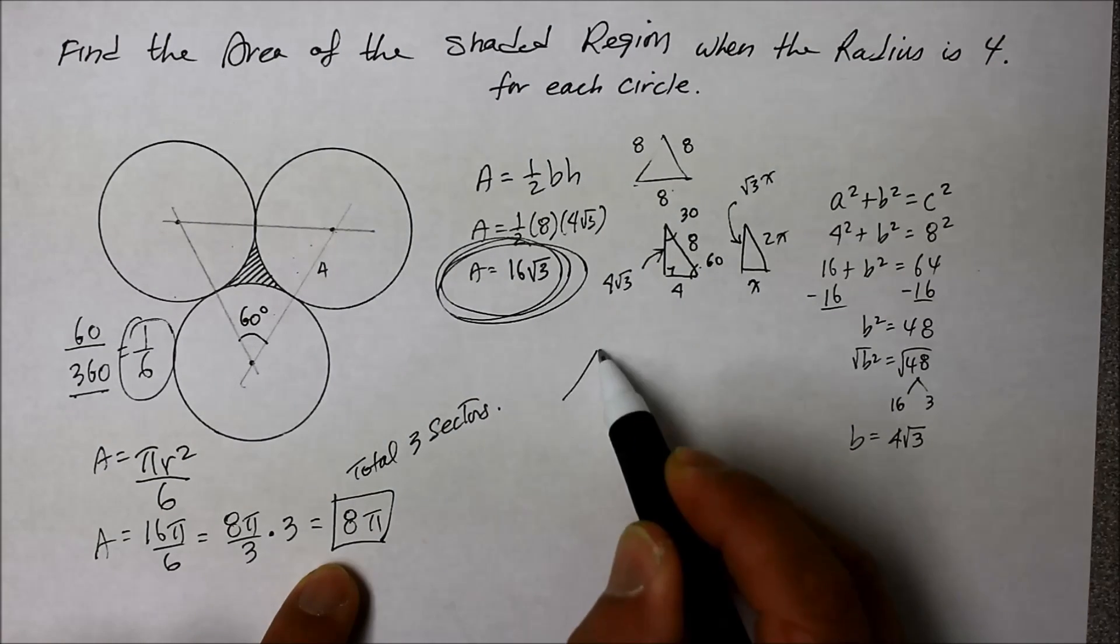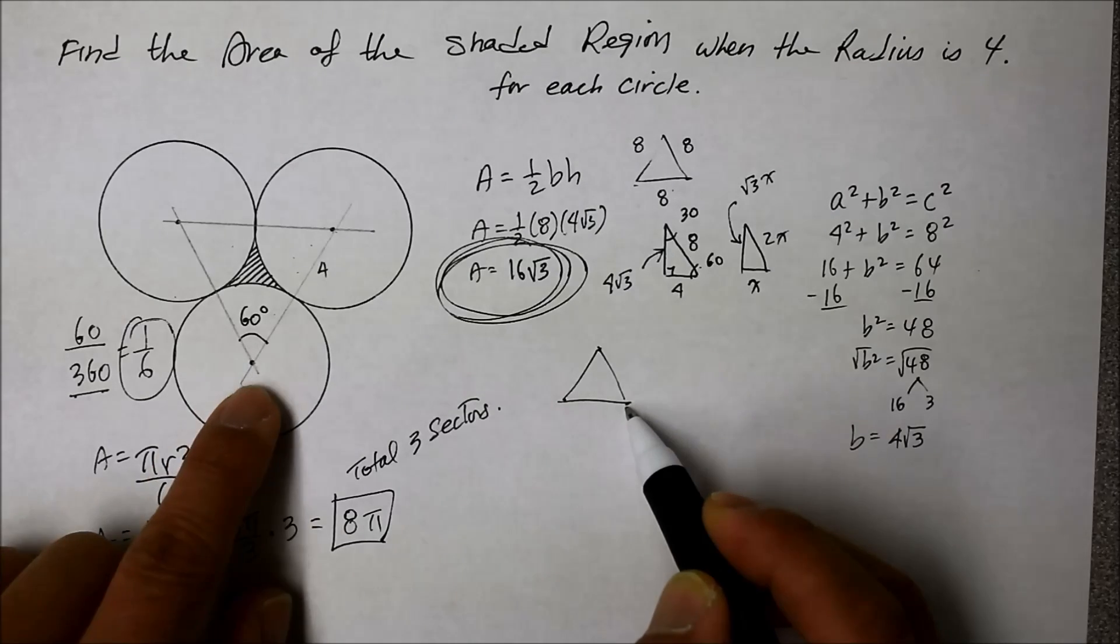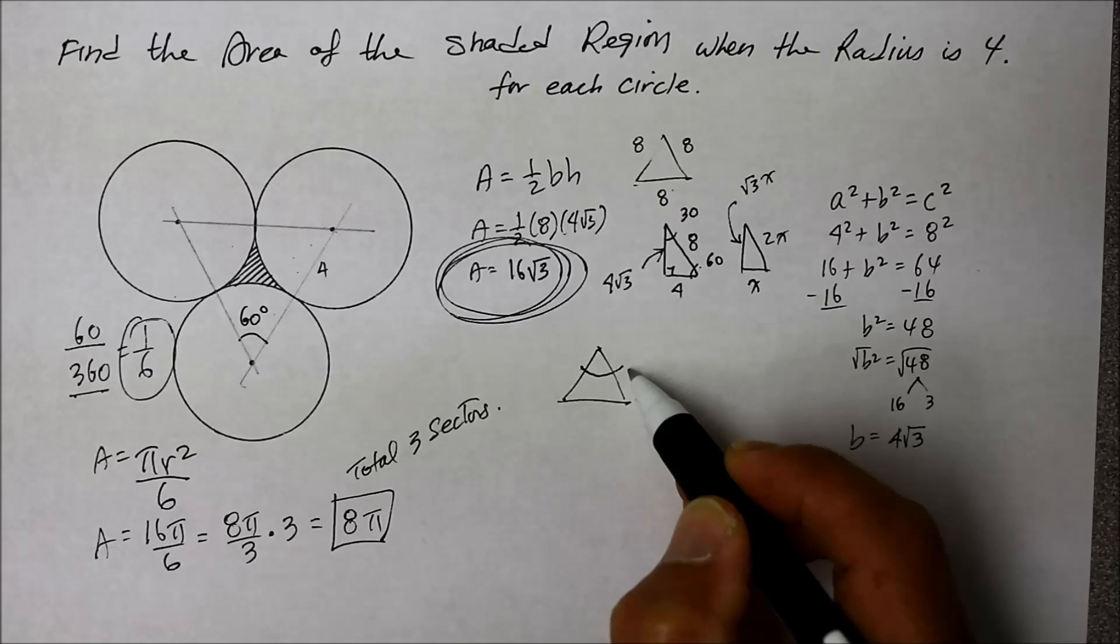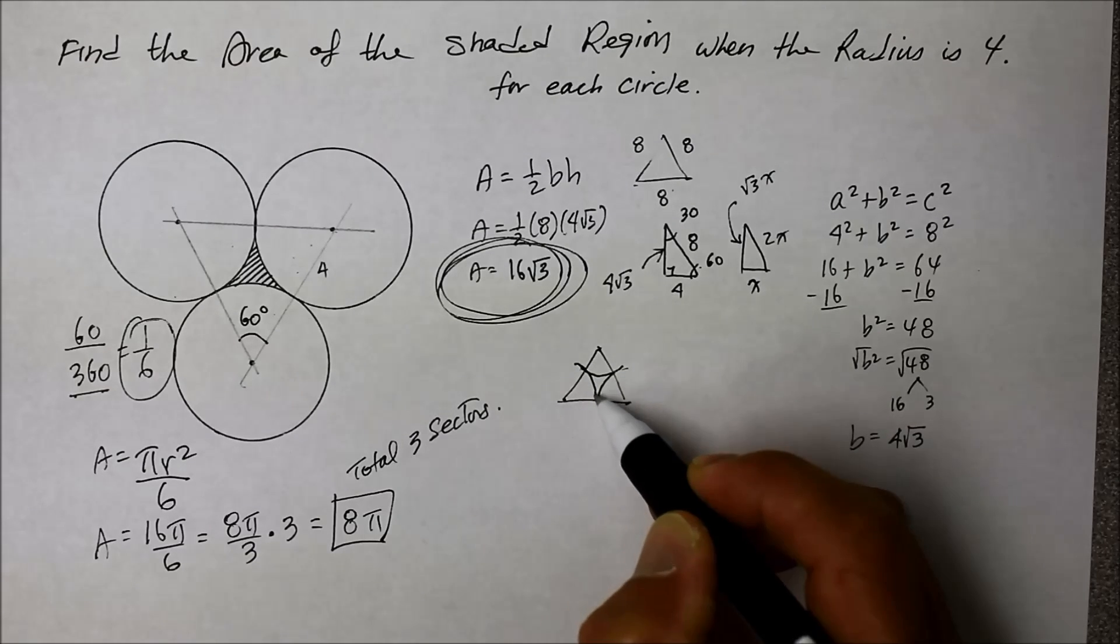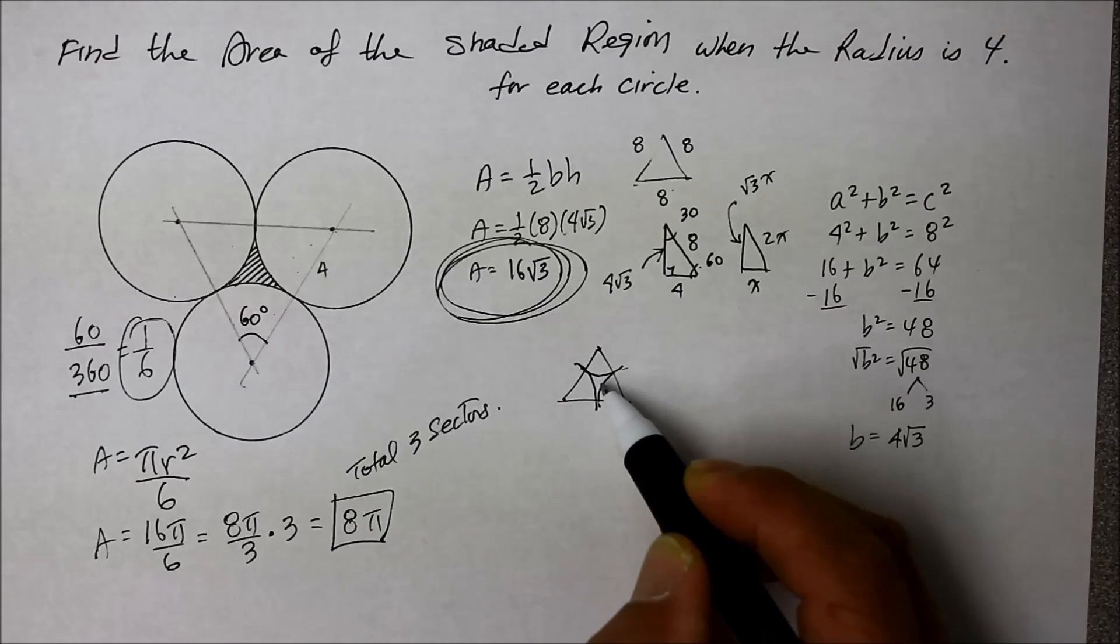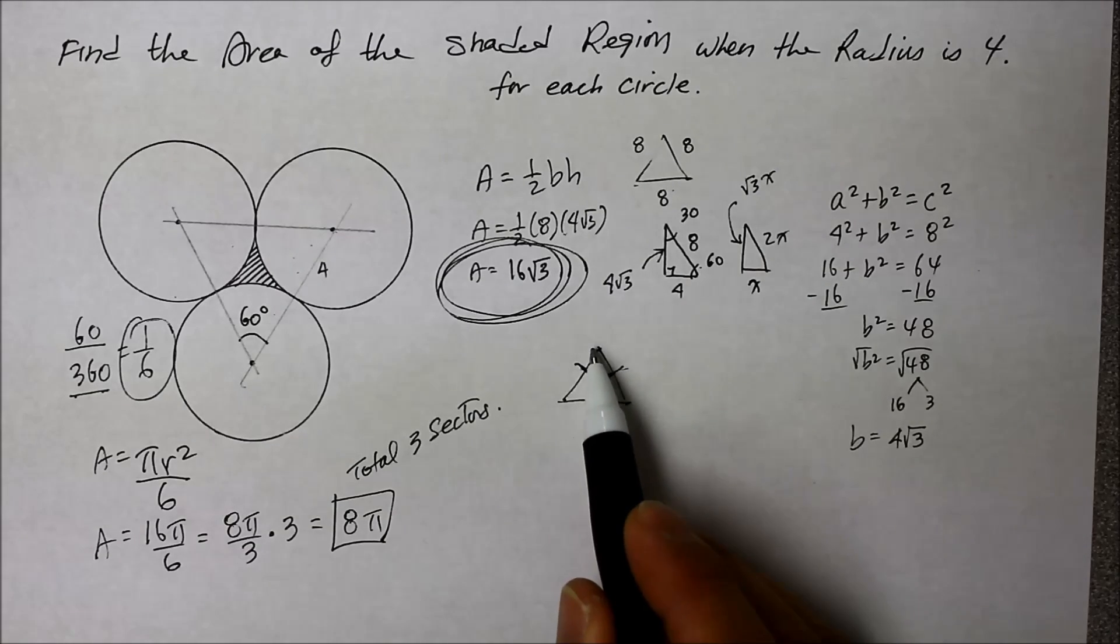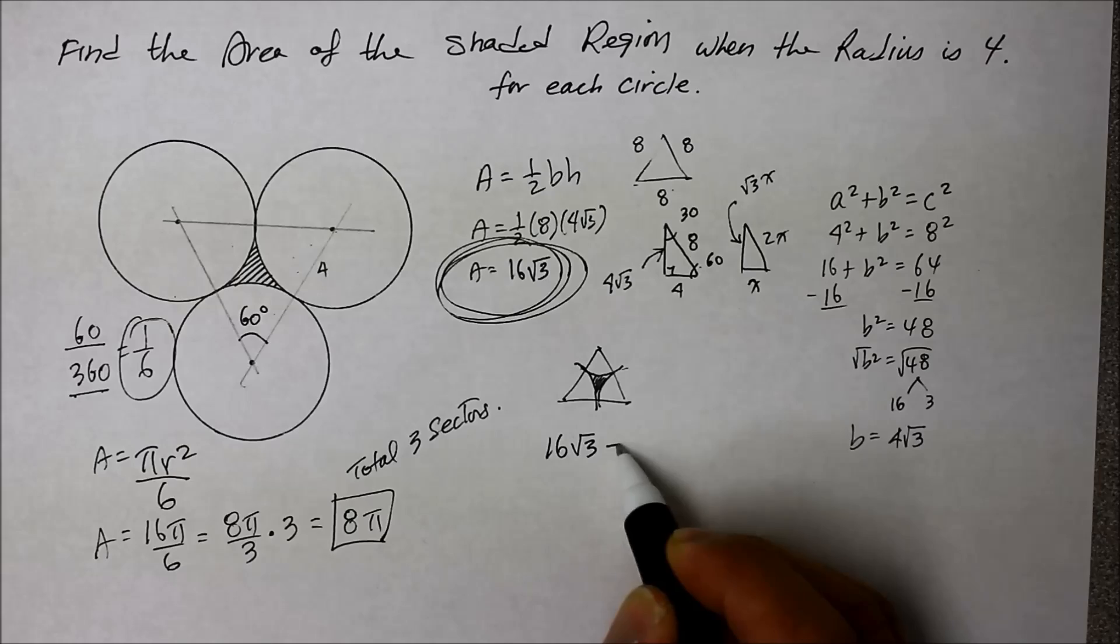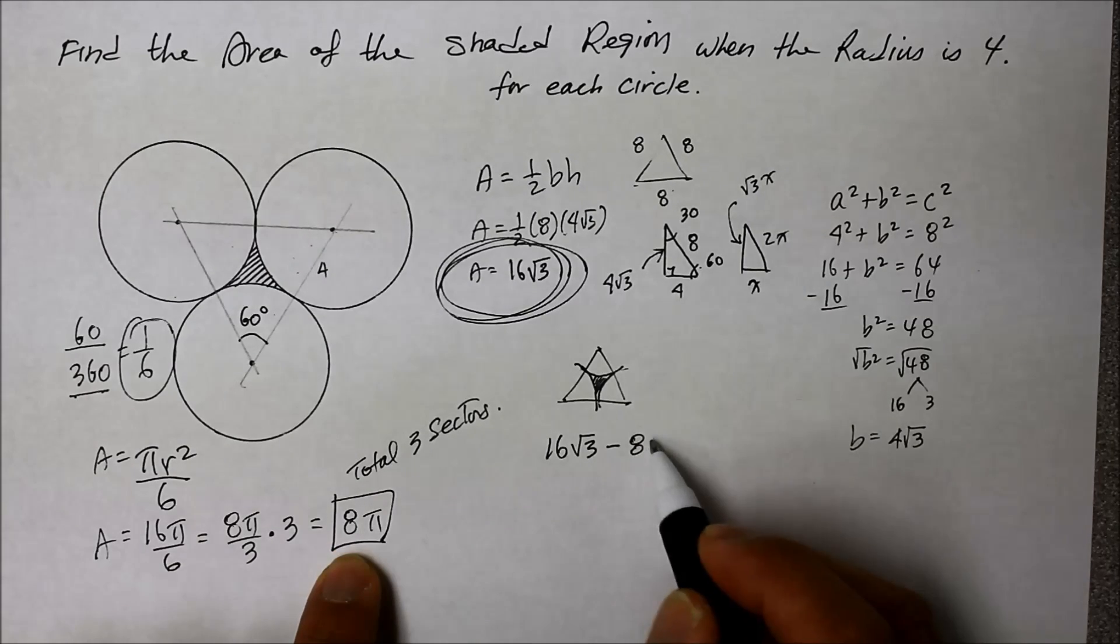Okay. Now we're going to take that away from the equilateral triangle. So here's what we're getting. Here's the equilateral triangle made up of the 3 circles, I mean the centers. And we're going to take away those sections.